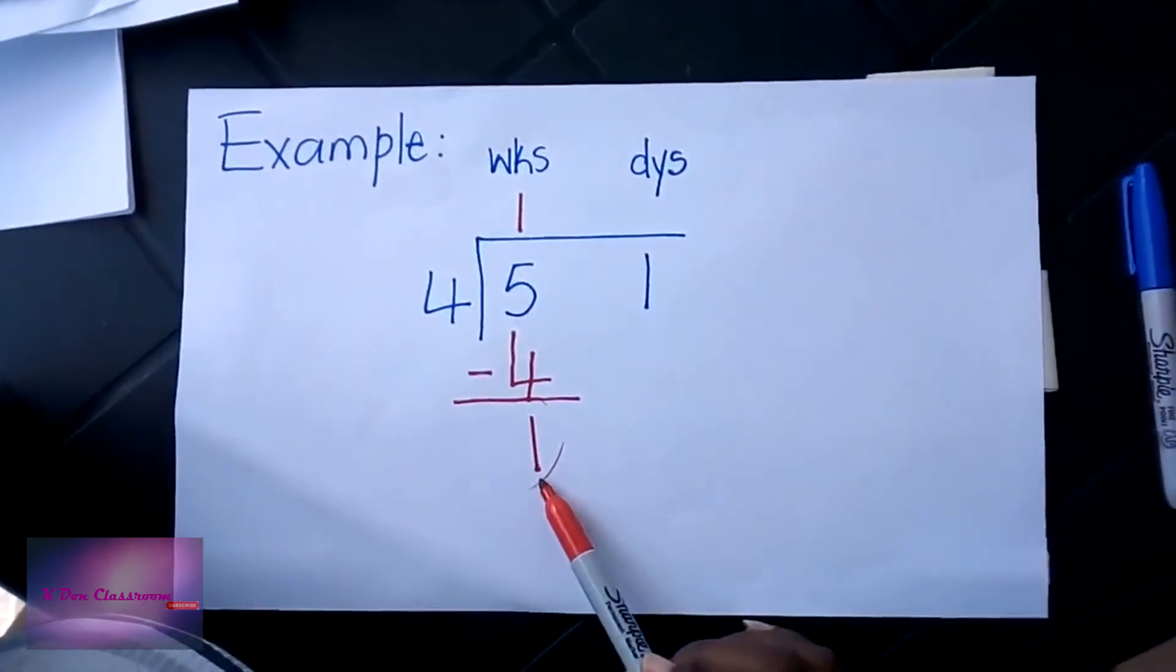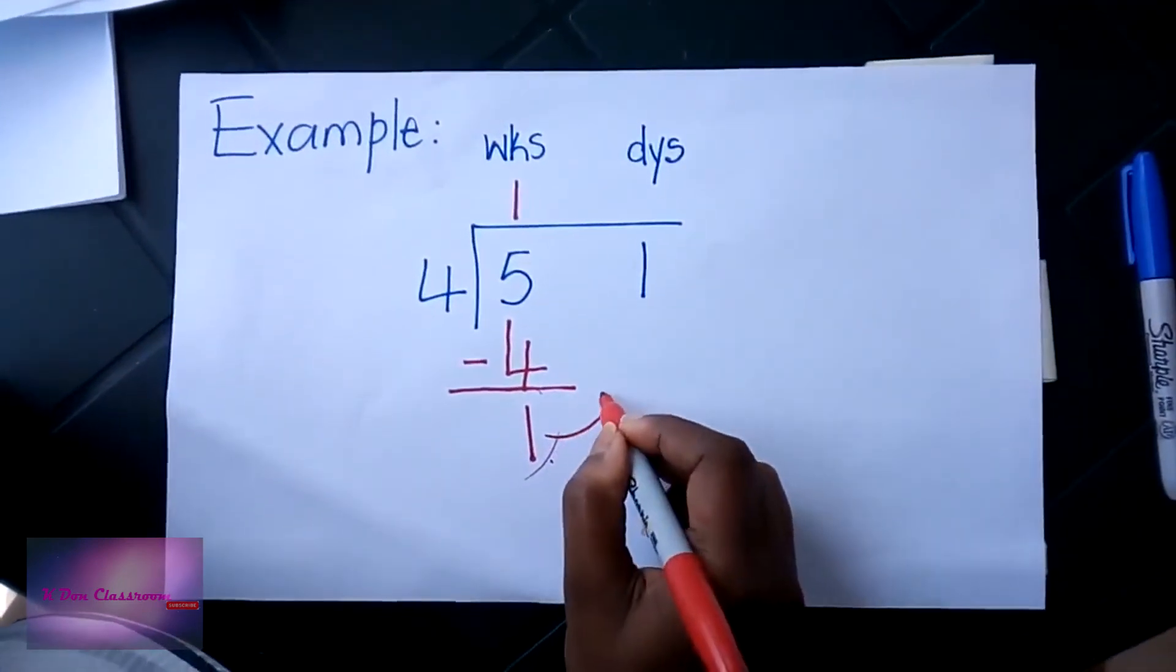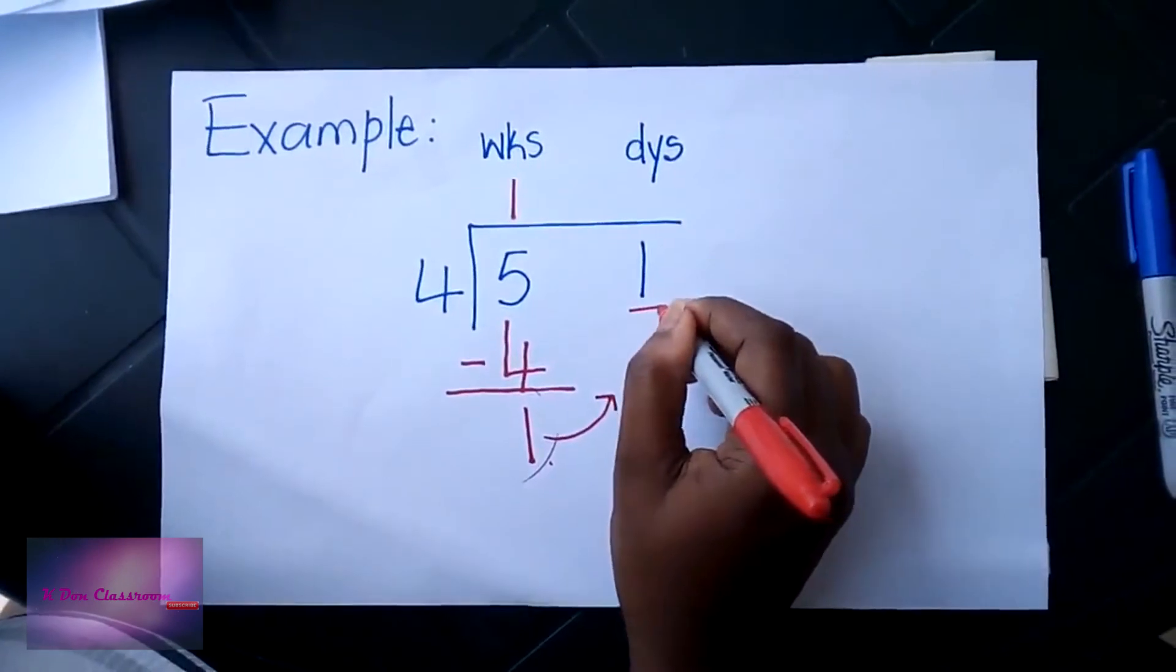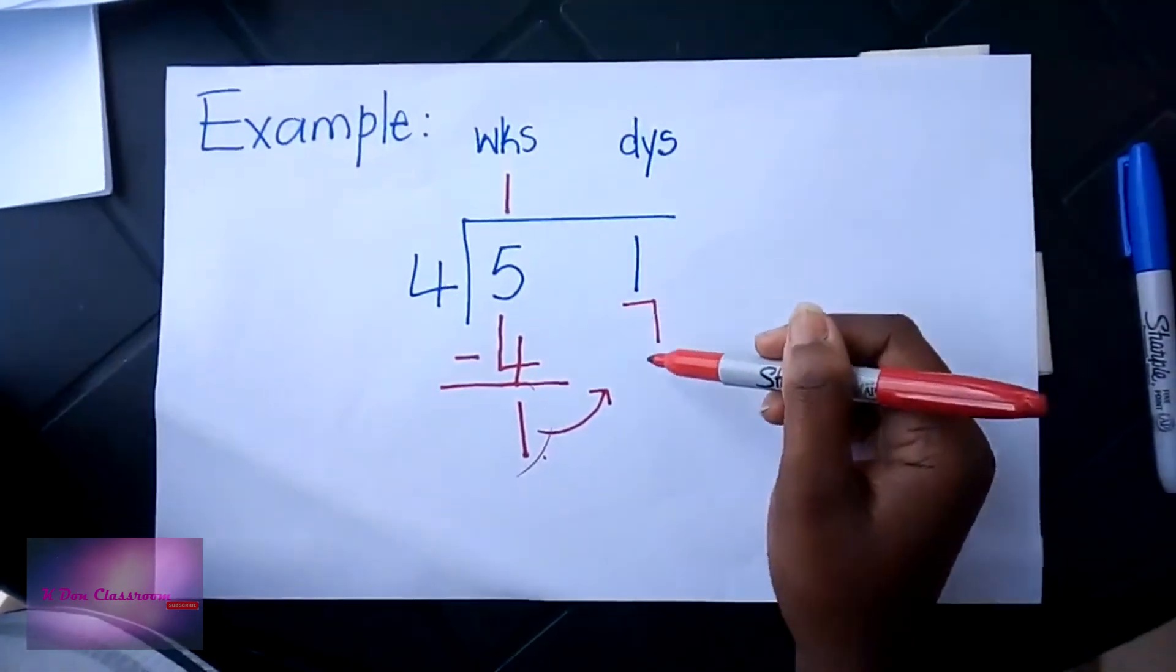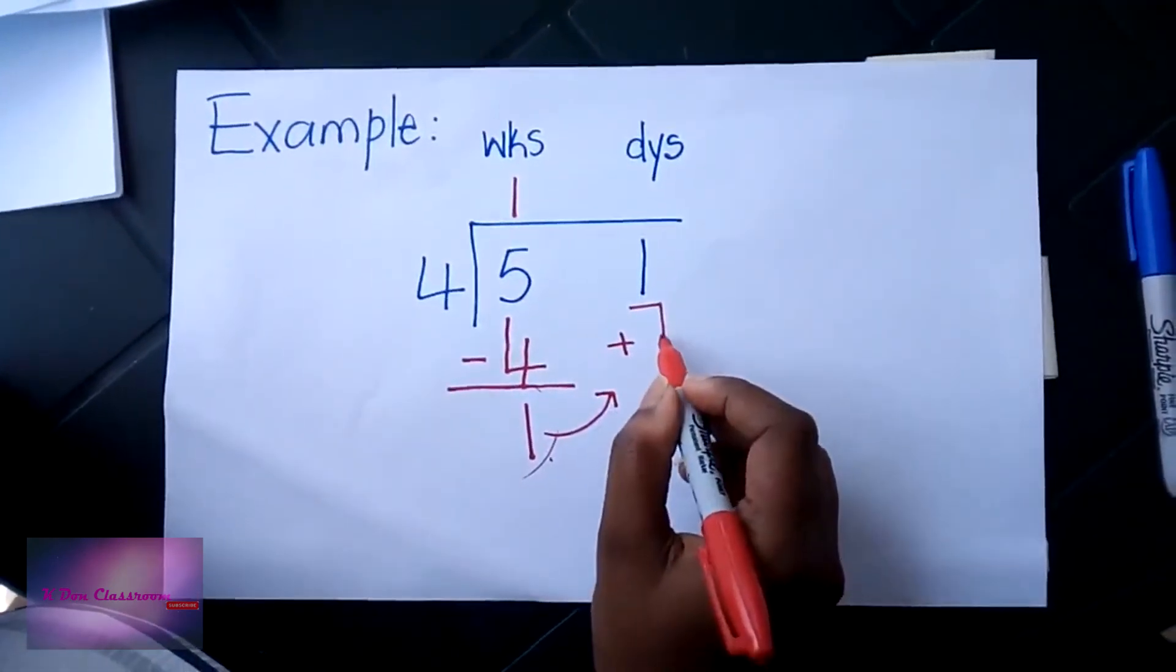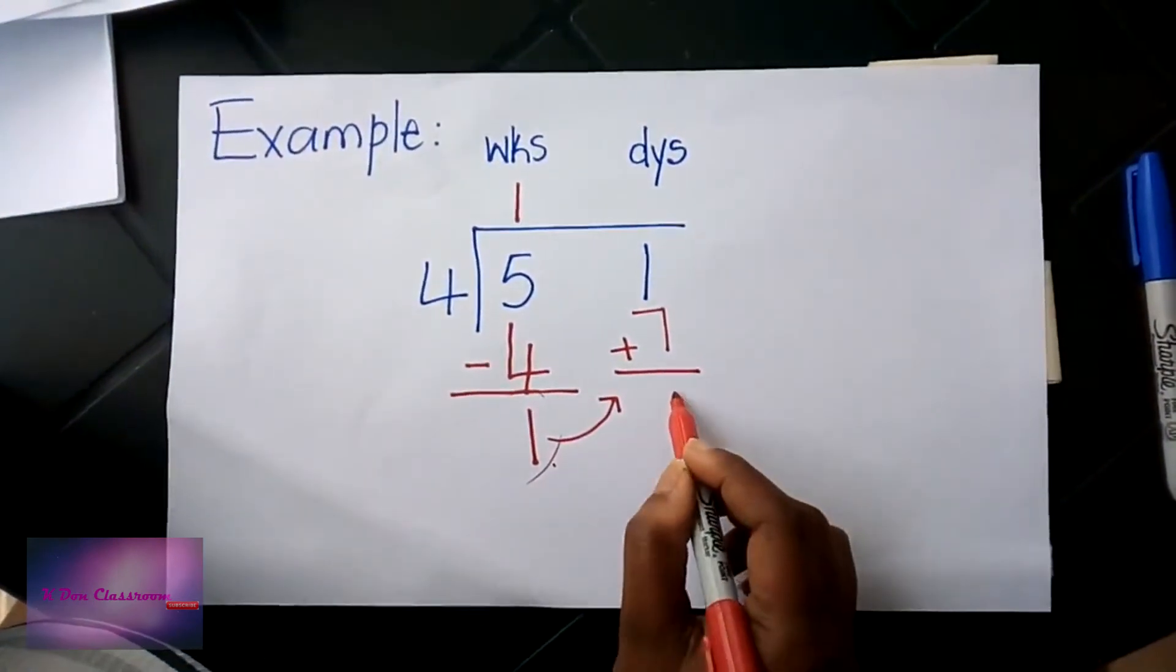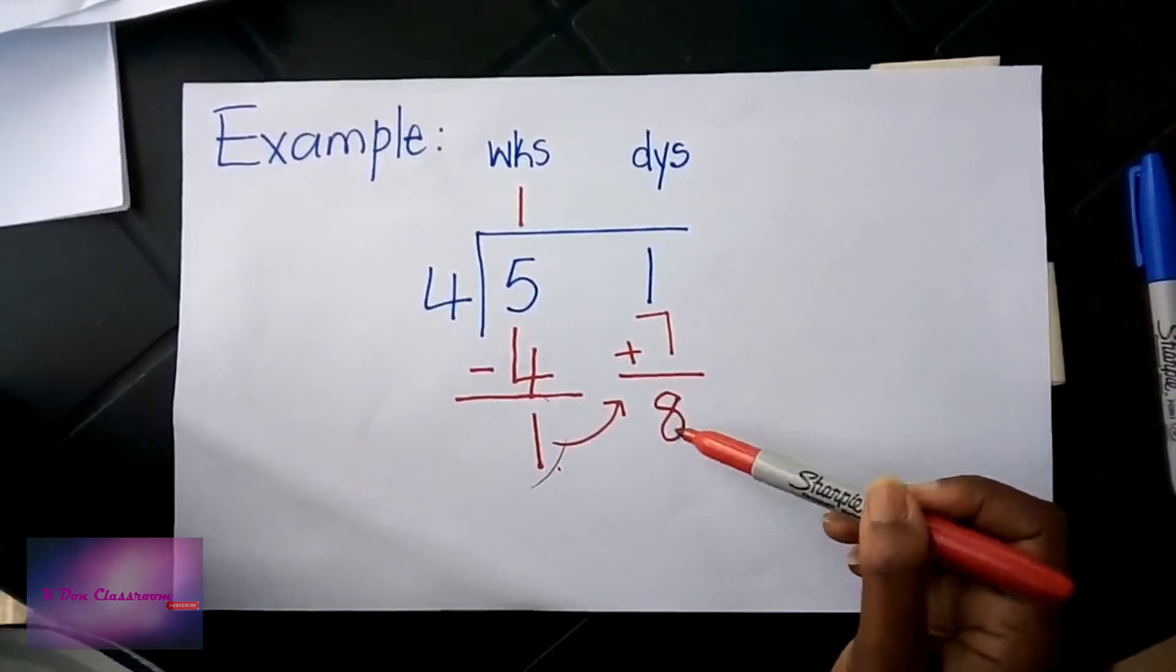How many days make a week? Seven. So I'm going to take that seven and write it below my one day. Now remember, we must add all our days together. Seven and one will give us eight. So we are now with eight days.